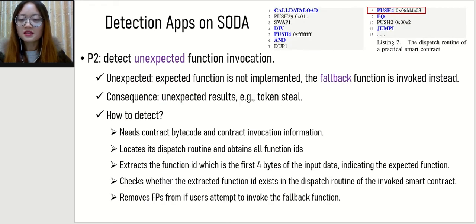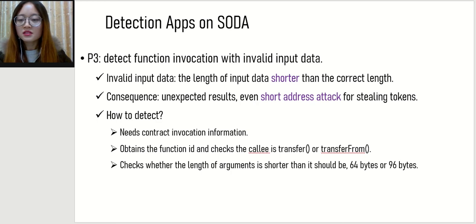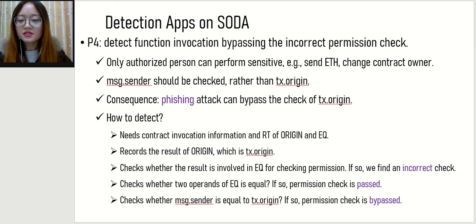The second app detects unexpected function invocation, meaning the expected function is not implemented and the fallback function is invoked instead, causing unexpected results such as token theft. The third app detects function invocation with invalid input data. We consider input data invalid if its length is shorter than the correct length. Invalid input data can incur unexpected results, even short address attacks for stealing tokens. The fourth app detects function invocation bypassing the incorrect permission check. Permission checks are required when performing sensitive operations such as sending ETH, and attackers can bypass the check and steal tokens.